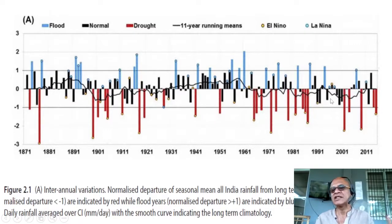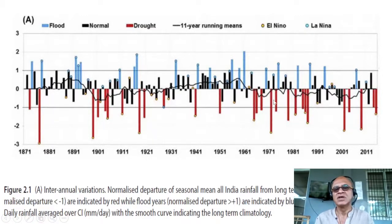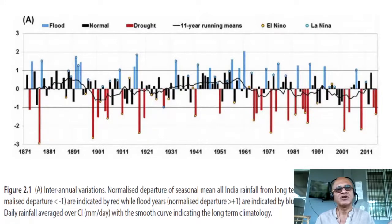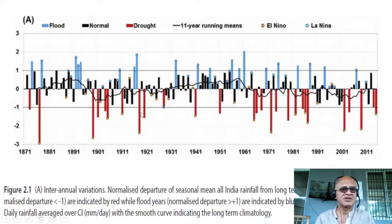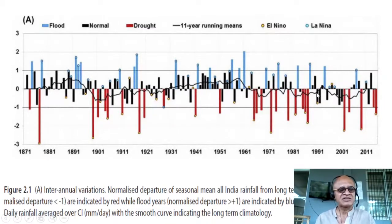Anecdotally, there are more droughts in the recent below-normal period than in earlier wet periods. If the frequency of droughts increases then it's something we have to worry about, and we'll see a table where it appears that the number of droughts in this period has increased compared to the previous period. This mega drought can be considered a climate extreme as well.